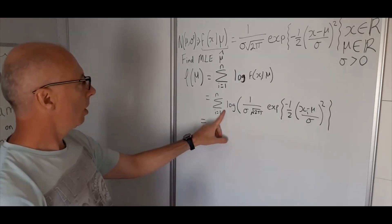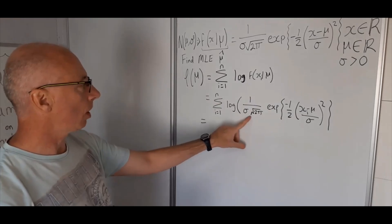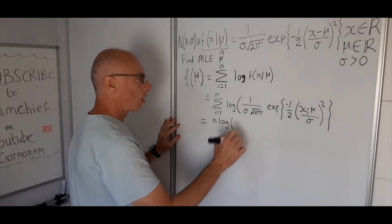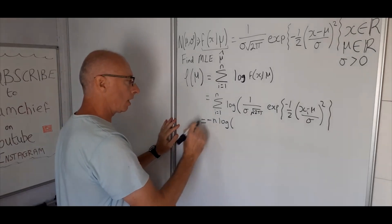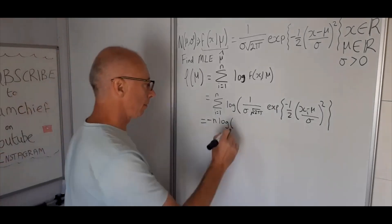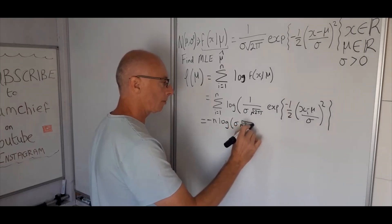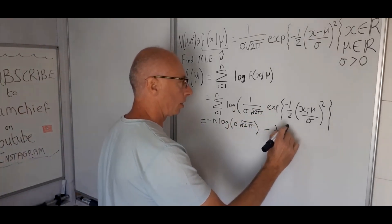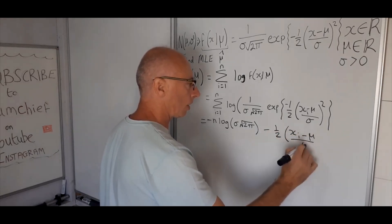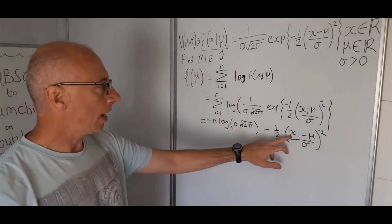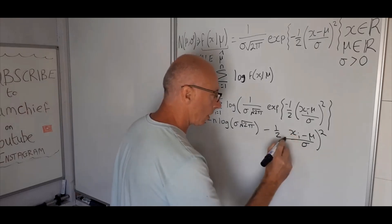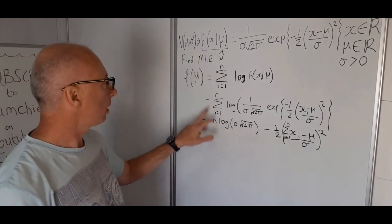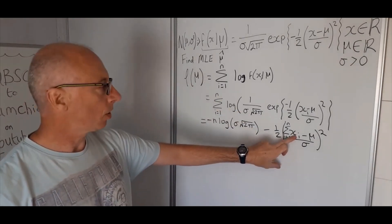Now let's take the log of this. We need to distribute the summation into all terms. The log of the 1 over sigma root 2 pi part does not depend on mu, so we can write n times that log. Since it's a reciprocal, we put a minus sign in front by logarithm laws. The log of the exponential and the exponential cancel, leaving minus one half times (x_i minus mu) over sigma, squared. We keep the summation on that term because mu depends on the data.